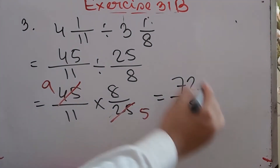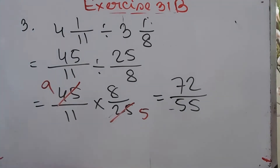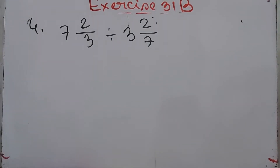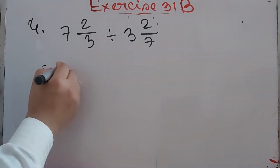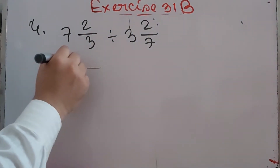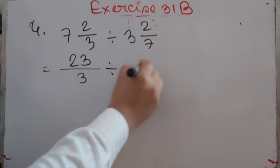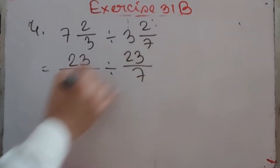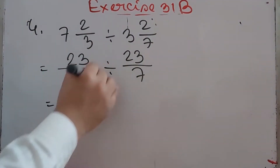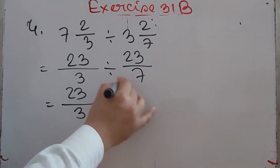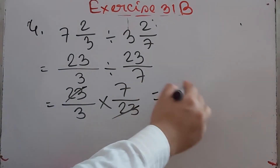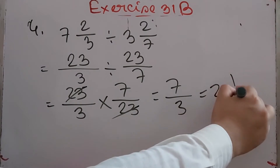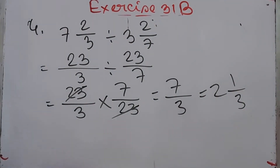You can convert 72/55 into a mixed fraction. Number 4: 7 whole 2/3 divided by 3 whole 2/7. Convert: 3×7 = 21 plus 2 = 23/3, and 7×3 = 21 plus 2 = 23/7. Division becomes multiplication by the reciprocal: 23/3 × 7/23. Dividing 23 by 23 gives 1, so the answer is 7/3 = 2 whole 1/3.